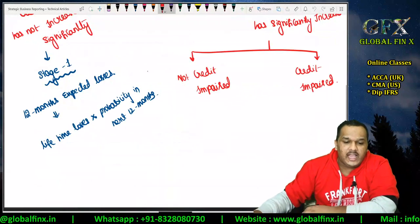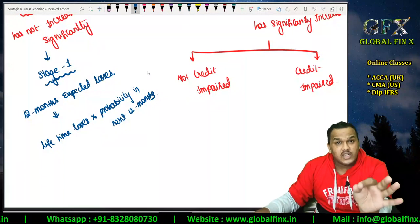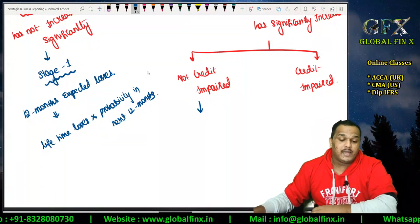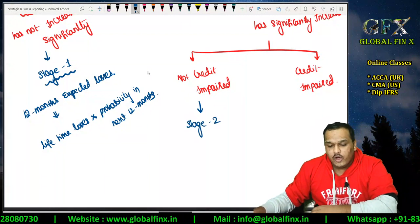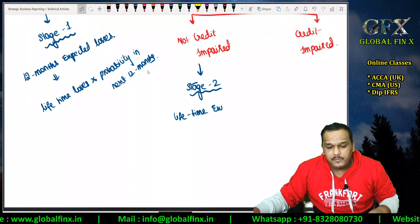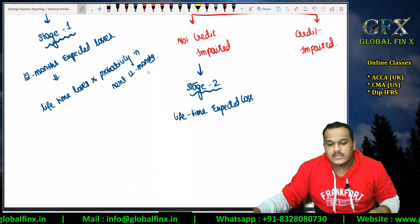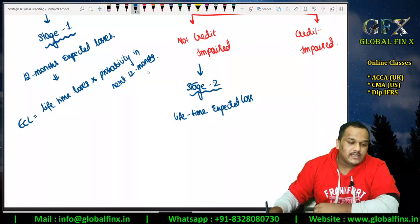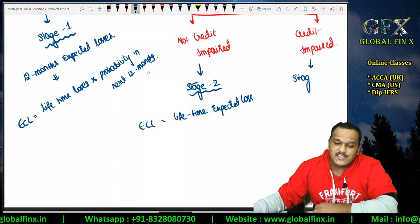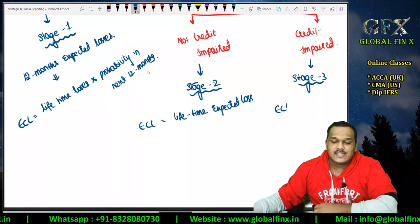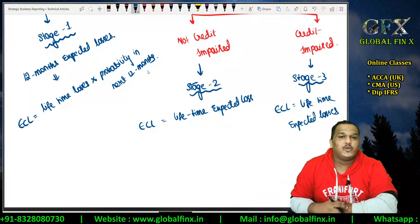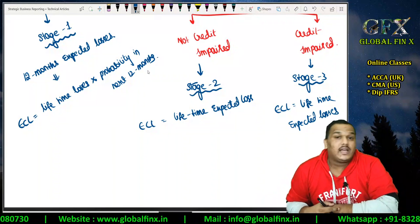This will be mentioned in the question — whether significant credit risk has increased with no impairment (Stage 2) or with credit impairment (Stage 3). In Stage 2, you create lifetime expected losses. In Stage 1, ECL is 12-month expected losses. In Stage 2 and Stage 3, ECL equals lifetime expected losses. But then students ask: what is the difference between Stage 2 (not credit impaired) and Stage 3 (credit impaired)?